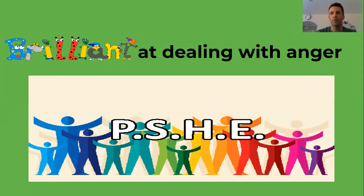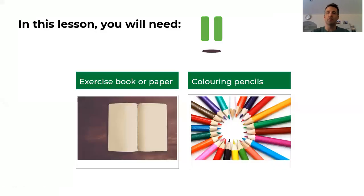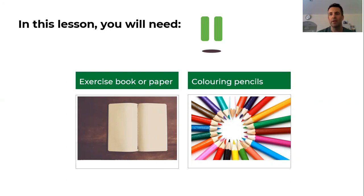I'm going to share the screen — here we've got the front page, so this is what we're going to be looking at today. If you need to pause the video to get your materials, you're going to need a piece of paper or your book and some coloring pencils. If you don't have colored pencils that's fine, you can just use your normal writing pencil. Pause the video now and get what you need.